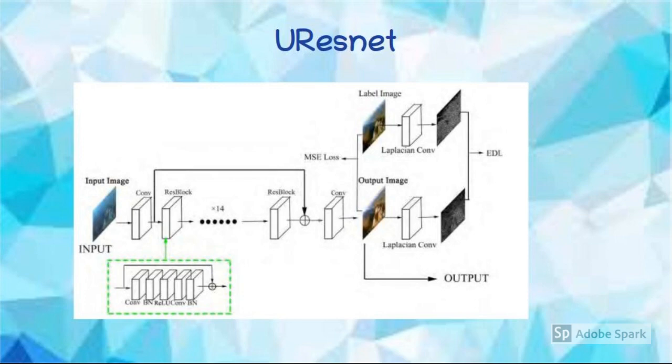The second step is the image enhancement phase using the Underwater ResNet. The U-ResNet consists of convolution layers and residual blocks. The residual blocks are arranged in the order: convolution layers, batch normalization, ReLU, and convolution layers. In addition, we have used the edge difference loss and the asynchronous training mode in Underwater ResNet.